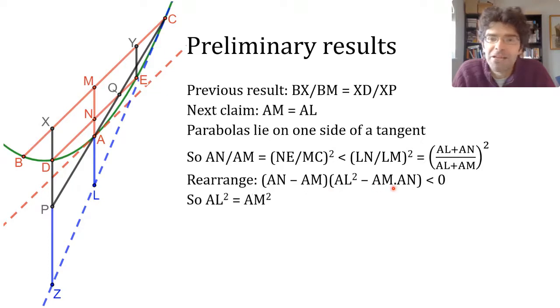So the right-hand bracket must flip from positive to negative exactly when the first one flips from negative to positive, and that's when N is equal to M. And from that, we get that AL squared is equal to AM squared, which is what we were after. So armed with that result, we can quite quickly see that PX and PZ are also the same, similar triangles.